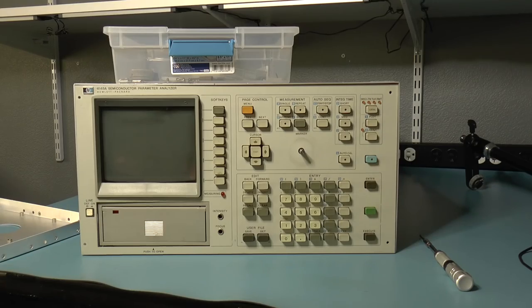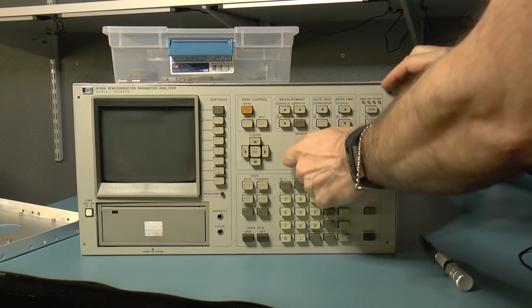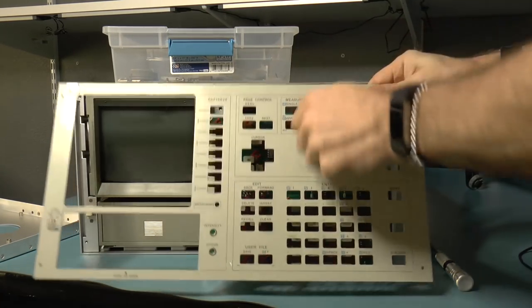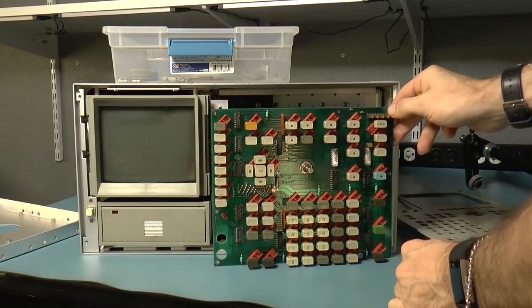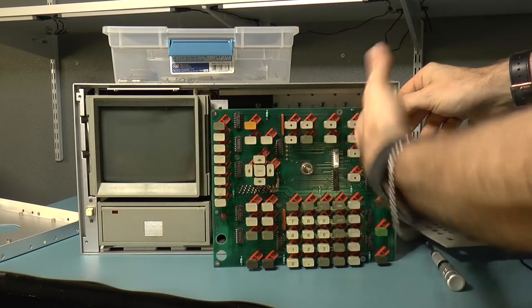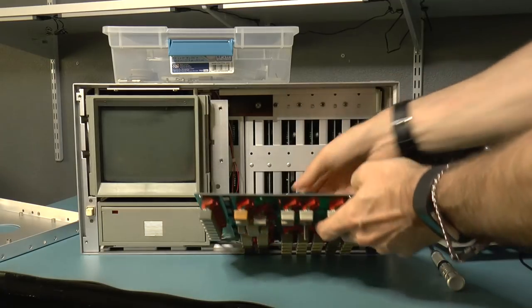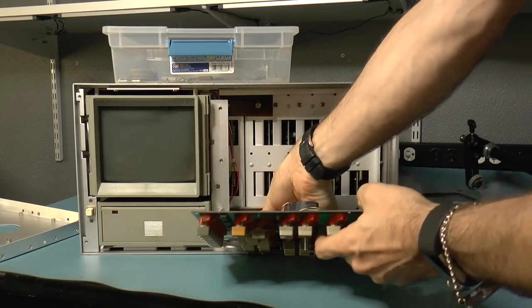I've already taken off most of the screws. There's the front panel, it just comes right off. And then there's the control board which contains all the buttons and some lights. That just unplugs.